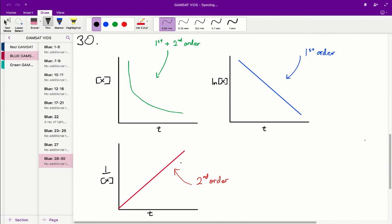So question 30 is one of those rare GAMSAT questions where you almost just need to rote learn the answers beforehand. What essentially we're describing in these graphs are, we'll take a look at this one. So this one describes our first and second order reactions.